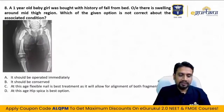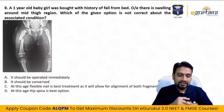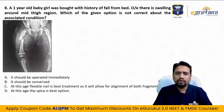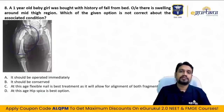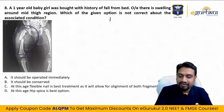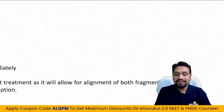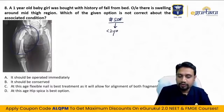Eighth question: a 1-year-old baby girl brought with history of fall from bed. On examination there is swelling around the mid-thigh region. The purpose of this question: whenever a child presents with a fracture shaft of femur, we treat according to protocol. For less than two years of age, two treatment options: gallows traction, or preferably a hip spica cast.